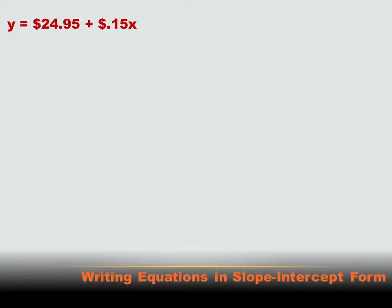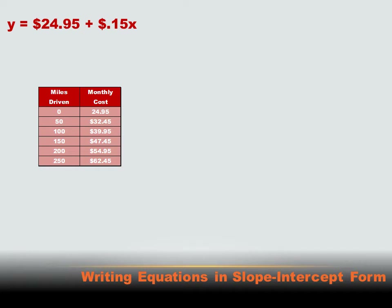I think I can understand it better if I put that information in a chart. For various mileages, I can calculate what the total monthly charge would be. For zero miles, I replace X with zero, and the cost is $0.15 times zero plus $24.95, which equals $24.95. I've done that with the rest of the mileages, so you can see what the monthly cost would be for each.